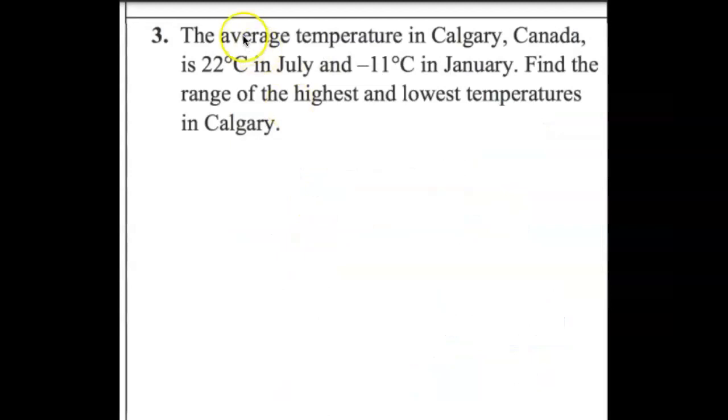Okay, for our next practice problem it says the average temperature in Calgary, Canada is 22°C in July and -11°C in January. Find the range of the highest and lowest temperatures in Calgary. So an important word that we need to underline here is find the range. In order to find the range, what operation do we do? Addition, subtraction, multiplication, or division?